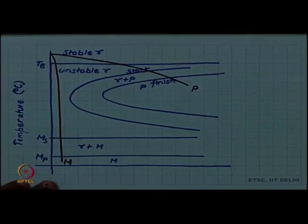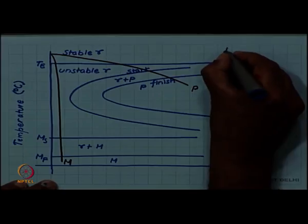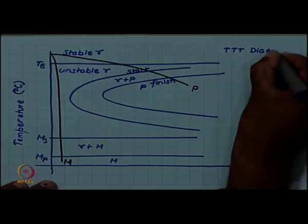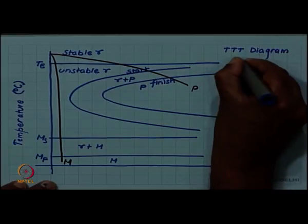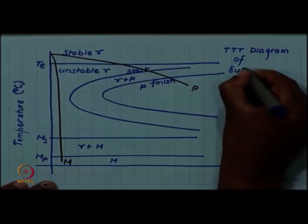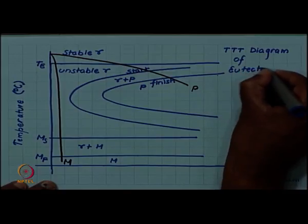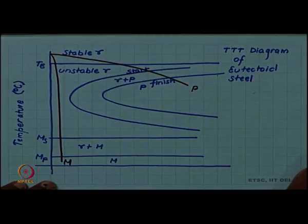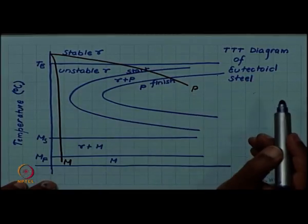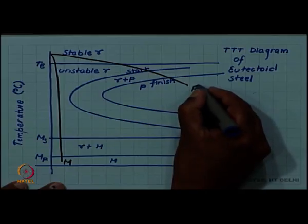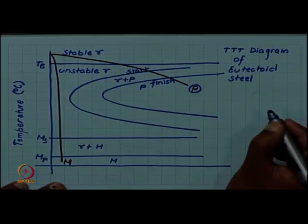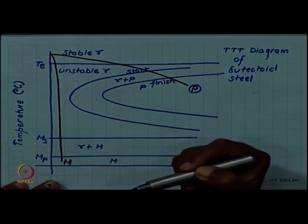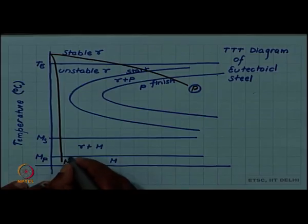We are familiar with the TTT diagram now. This is the TTT diagram of eutectoid steel. And we have seen how slower coolings will lead to formation of pearlite, either through annealing or normalizing coarse pearlite, fine pearlite, and a very fast quench or a fast cool will lead us to martensite.